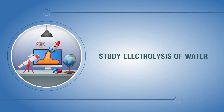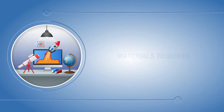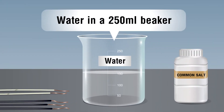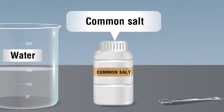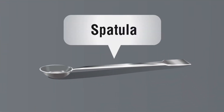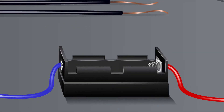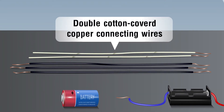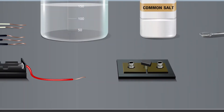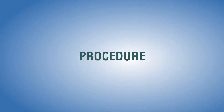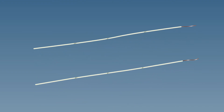Study: electrolysis of water. Materials required: water in a 250 ml beaker, common salt, a spatula, a battery of 3D type 1.5 volt cells, a cell holder, double cotton covered copper connecting wires, and a switch.